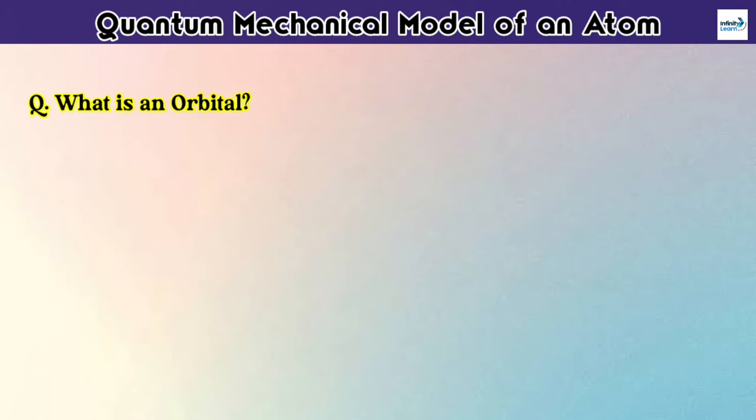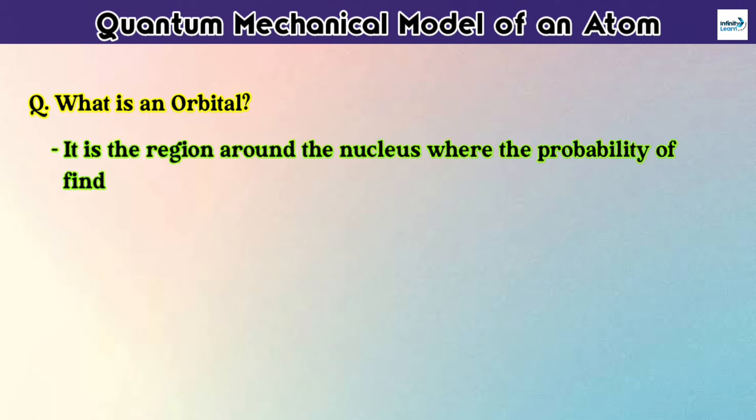But wait a second, what is orbital? So it is the region around the nucleus where the probability of finding an electron is maximum. It is basically called an orbital.